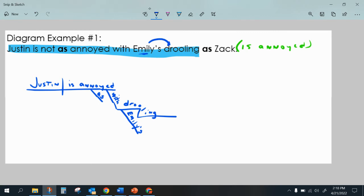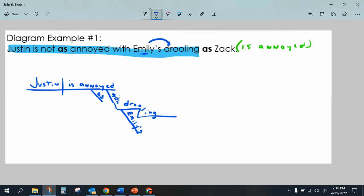And then we'd say, well, how annoyed? He is as annoyed as Zack is annoyed. And that becomes the elliptical part.